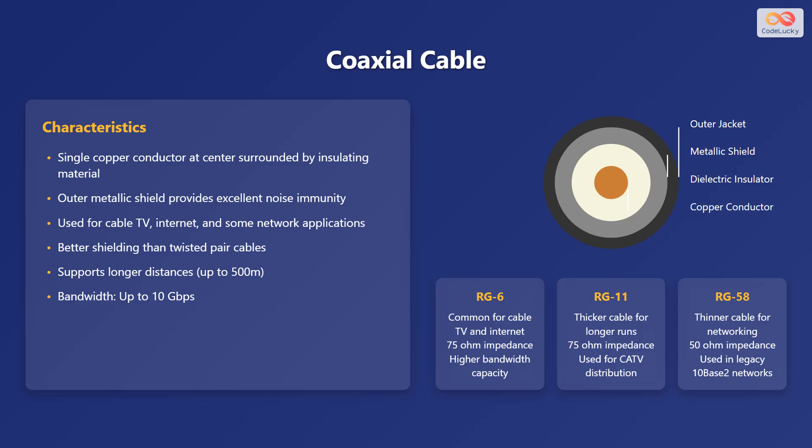Common types of coaxial cables include RG6, which is often used for cable television and internet; RG11, a thicker cable for longer runs; and RG58, a thinner cable used in legacy 10Base2 networks.